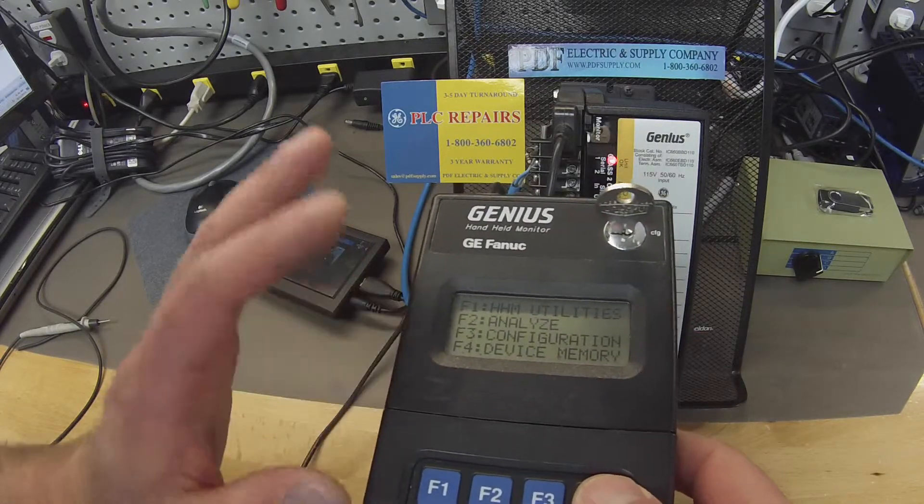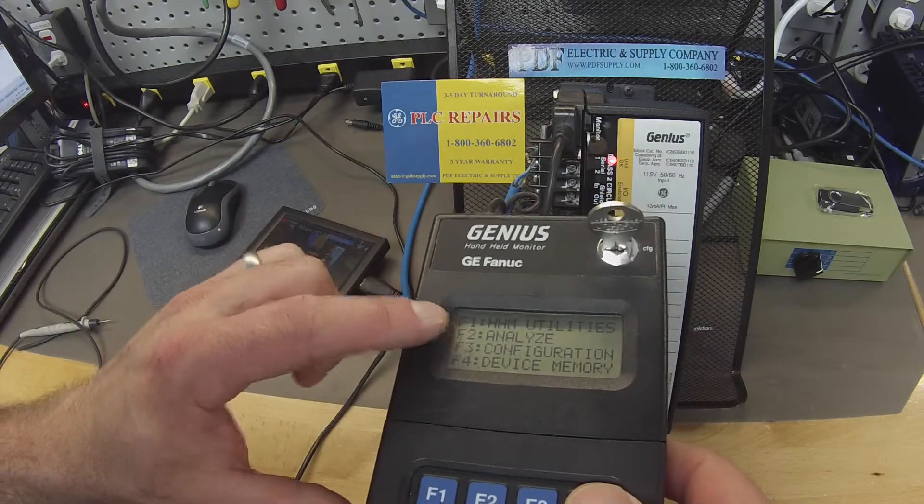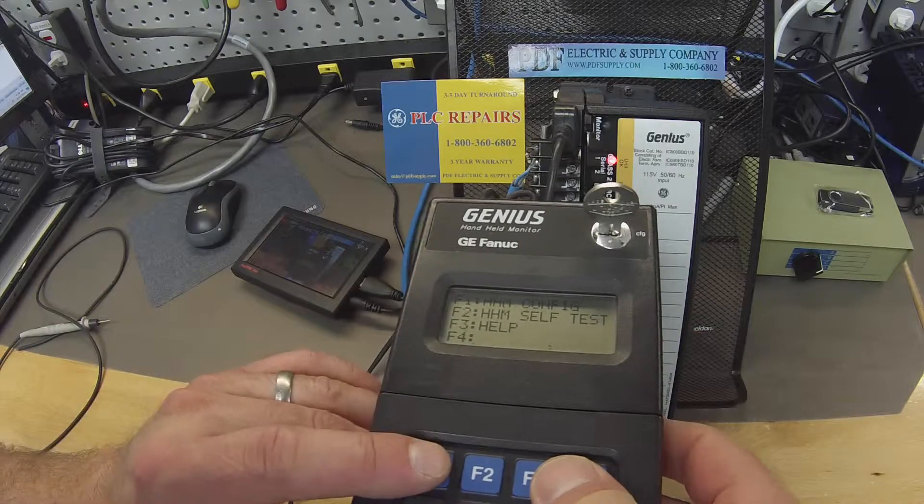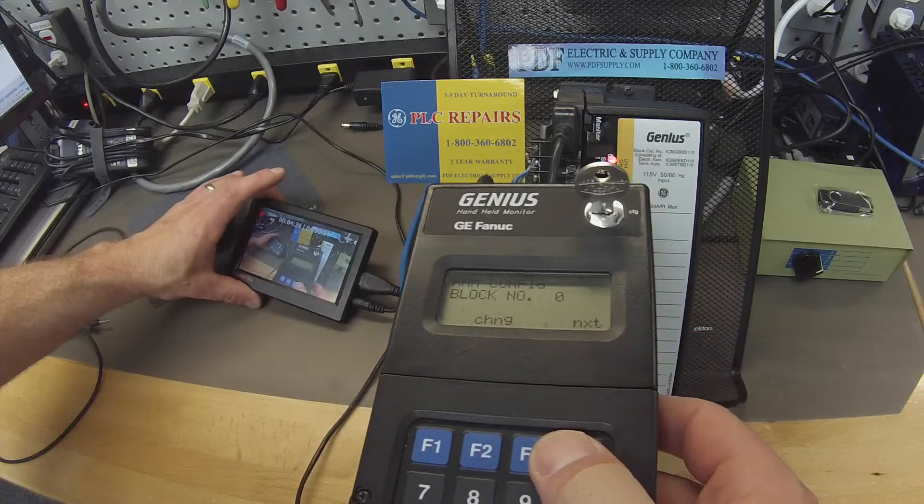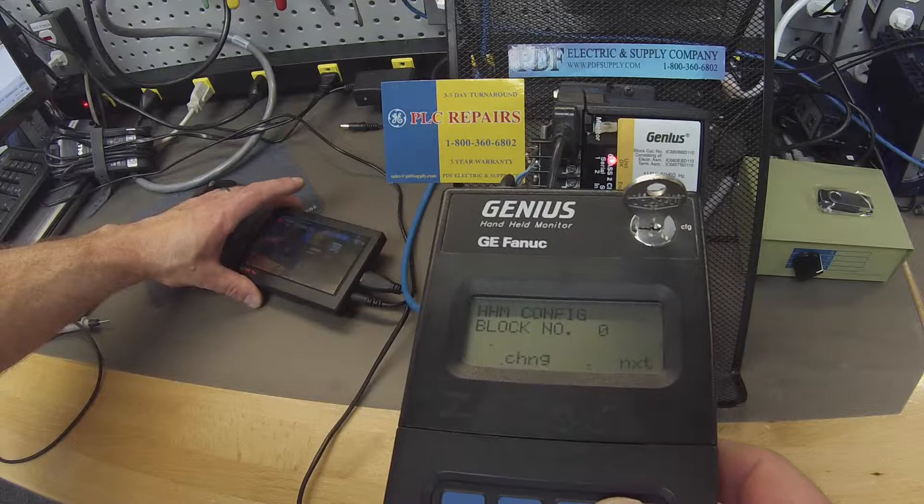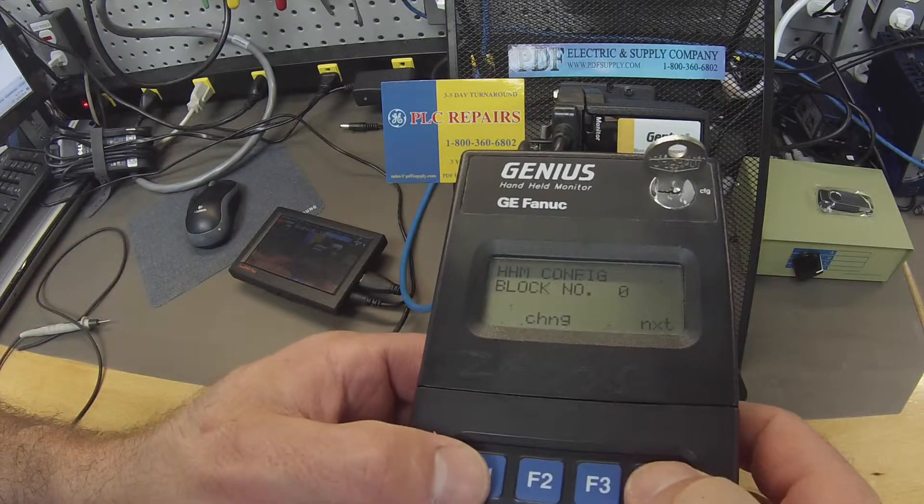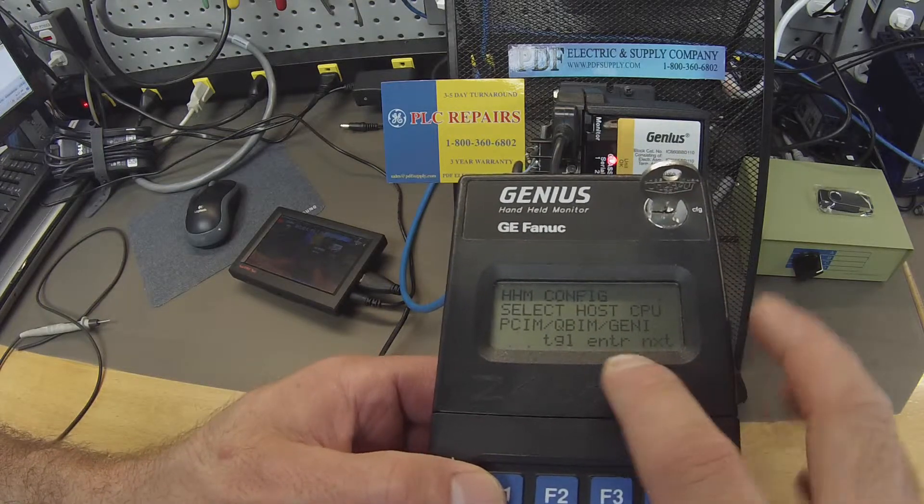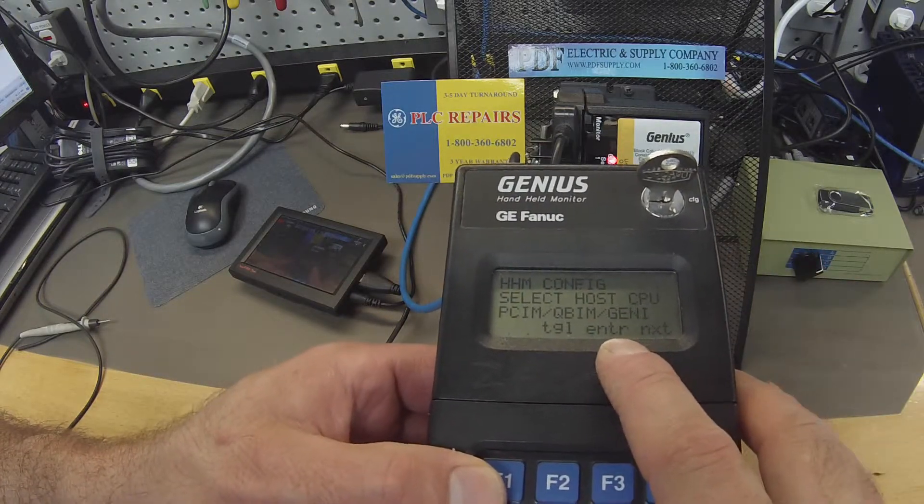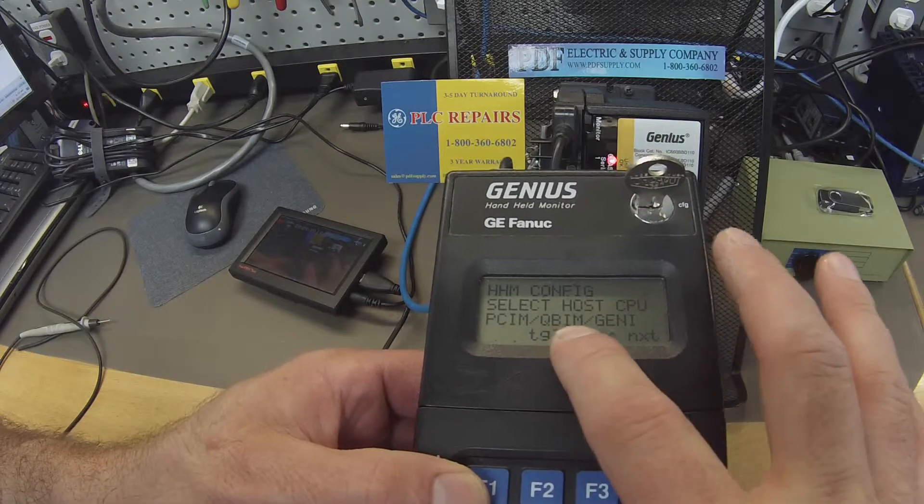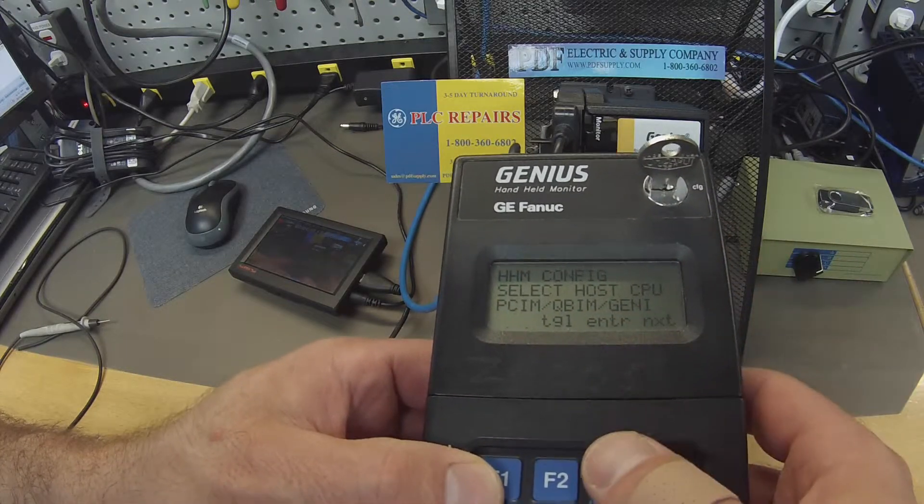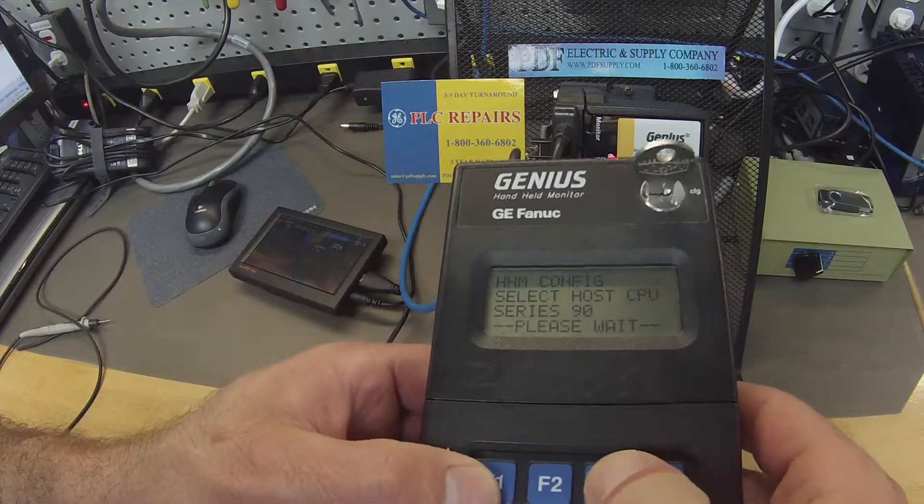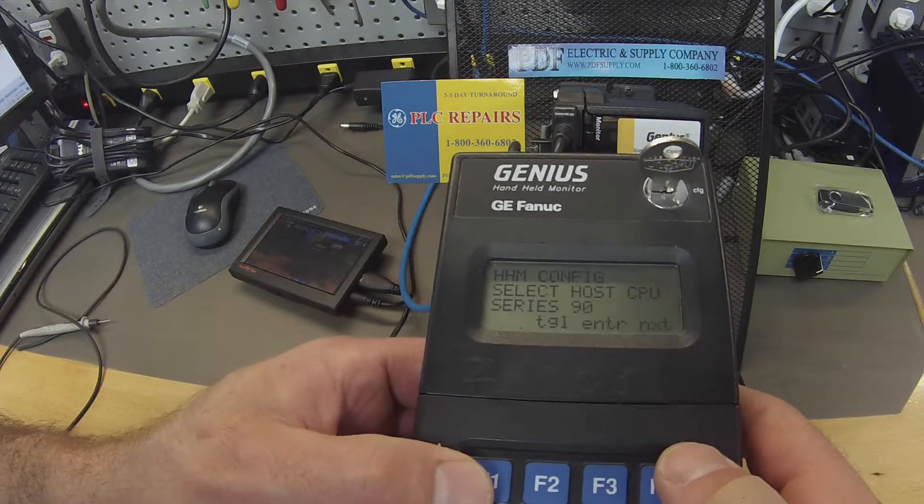Now the next thing is, just to make sure we're all on the same page, I'm going to go to F1 which is handheld monitor utilities. F1 handheld monitor configuration. I'm going to go next, next, and select the proper host. Now before, I was using something on an application for field control which is this PCIM QBIM Genius. So what I'm going to do is toggle that to series 90 host. I'm going to hit enter. Now we should all be there.